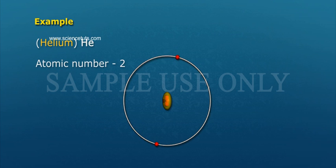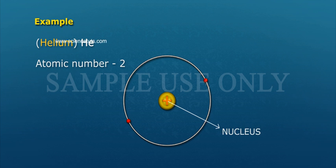Example: Helium, atomic number 2. It has two electrons.